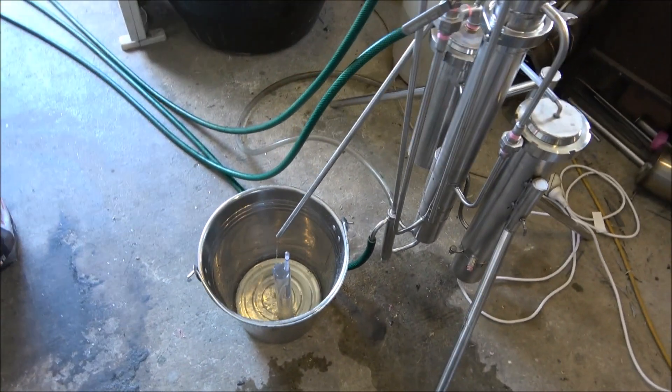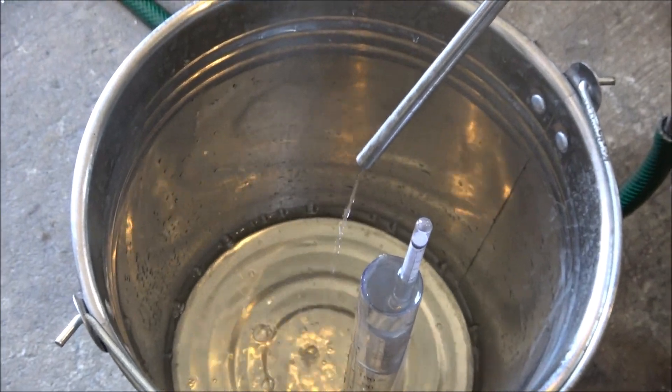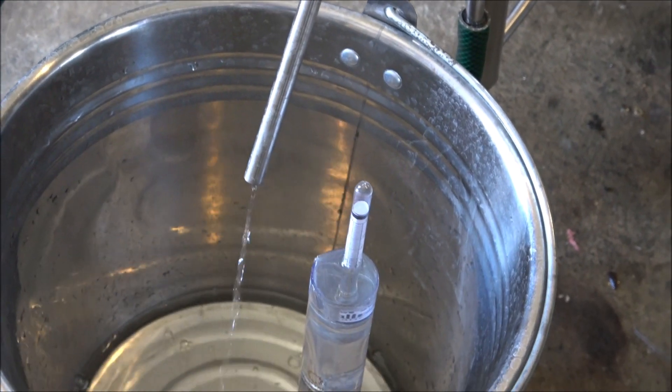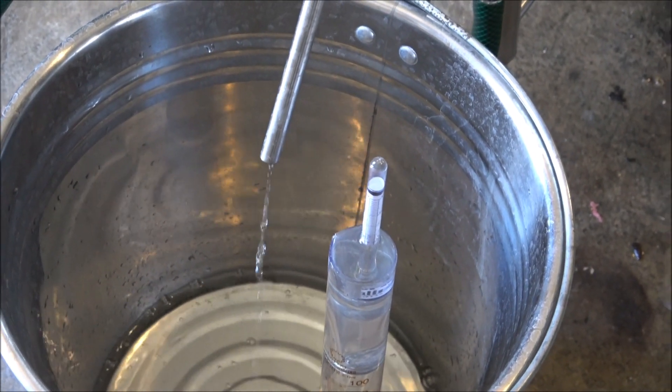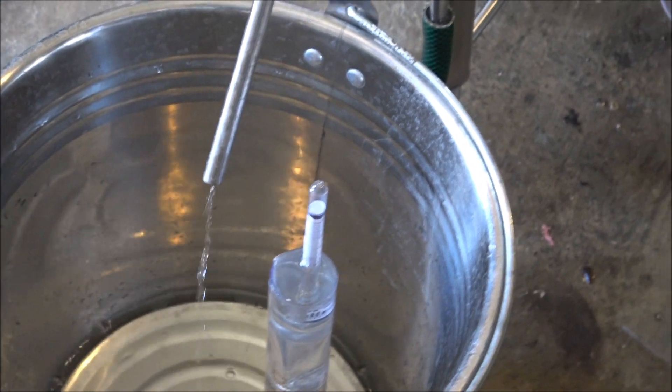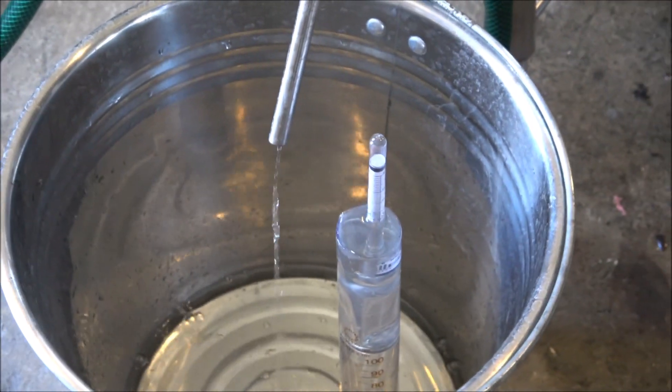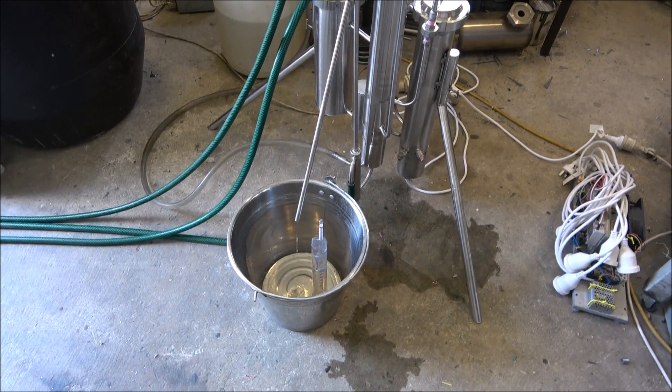And it produces approximately 6 liters of stripped alcohols at 50% alcohol content if you have 10 to 12% wash. Of course, if your wash is going to be lower with percentage, your output is going to be a little bit lower.